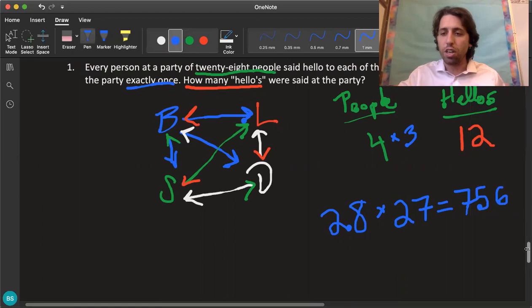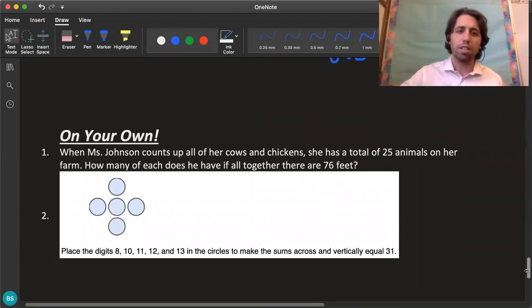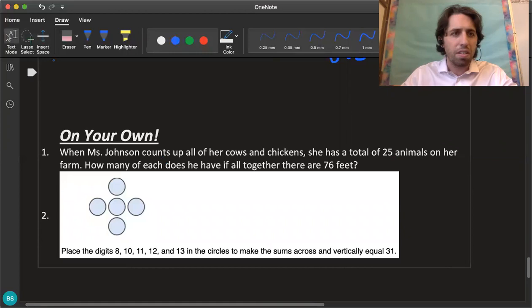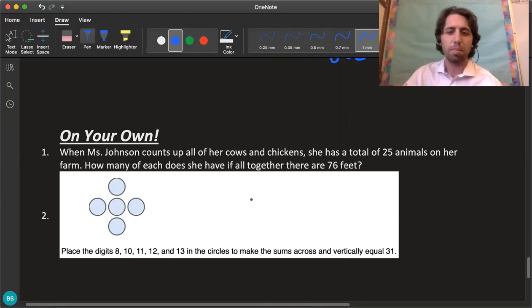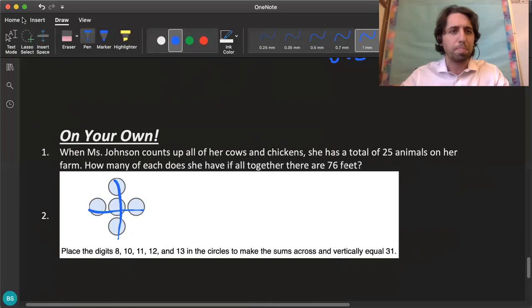I'm going to ask you to try two more on your own so here they are. The first one says when Mrs. Johnson counts up all of her cows and chickens she has a total of 25 animals on her farm, how many of each does she have if all together there are 76 feet. So think about the difference in feet between chickens and cows. And the second one says place the digits 8, 10, 11, 12, and 13 in the circles to make the sums across and vertically, so across and vertically each one should get a sum of 31. So if you don't know what a sum is maybe look that one up real quick. I'm going to leave you at that, I'm going to ask you to do some scratch work and then to enter the pictures of the work that you've done into the document that you're submitting as a proof of completing this video. Best of luck and I'll see you soon. Peace.